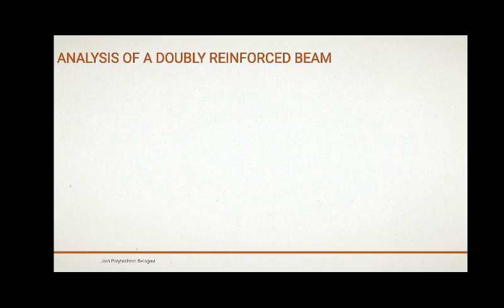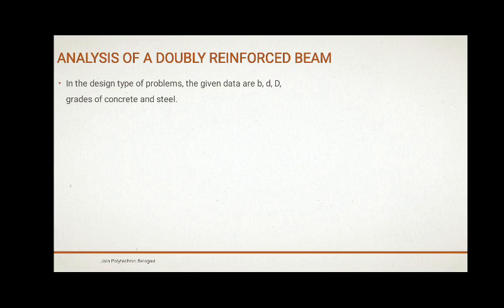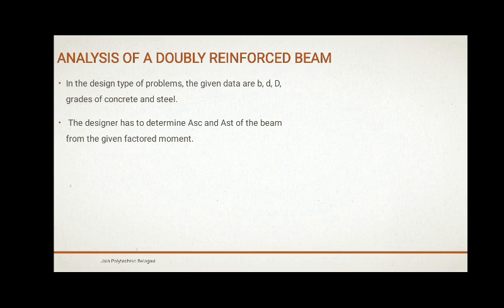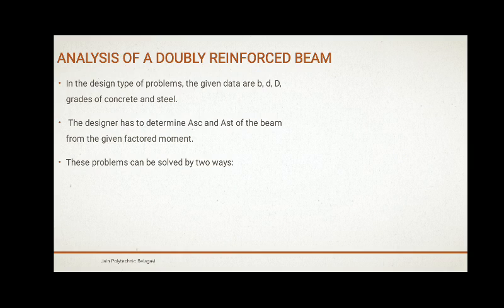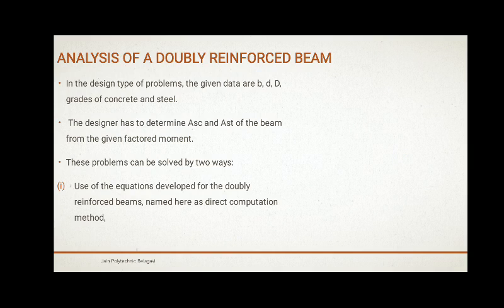Analysis of doubly reinforced beam — in the design type, the given data will be B, small d, capital D, and the grade of concrete and steel. We have to determine AS-C and AS-T, since it is a doubly reinforced beam with steel provided in both sections. We find AS-T, that is the area of steel in the tension zone, and AS-C, the area of steel in the compression zone, from the given factored moment. These design problems can be solved by two methods: by use of equations developed from the doubly reinforced beam, that is the computation method, and secondly by using SP-16 charts. SP-16 stands for Special Publication.